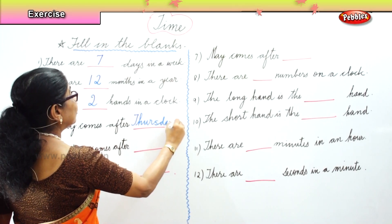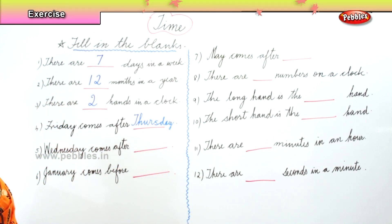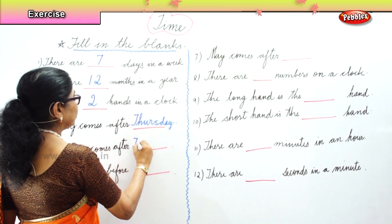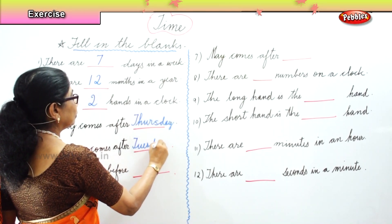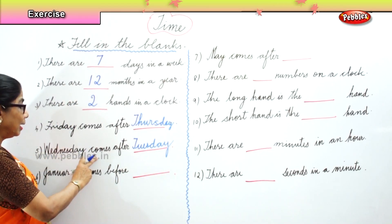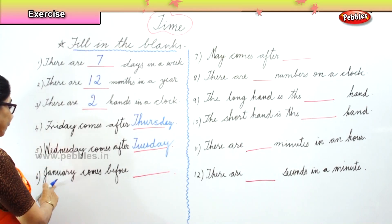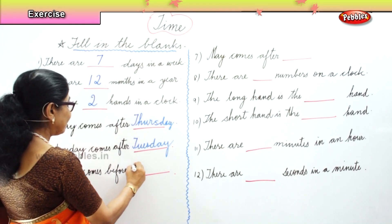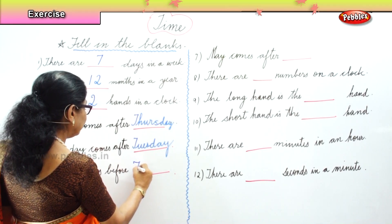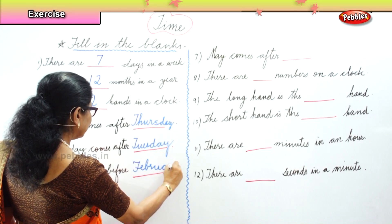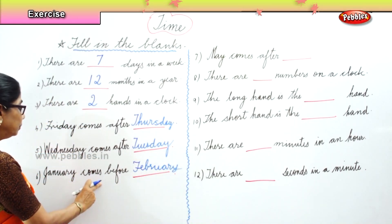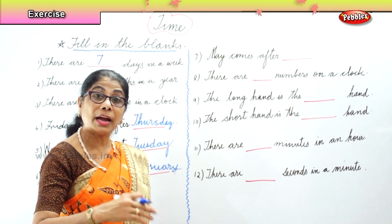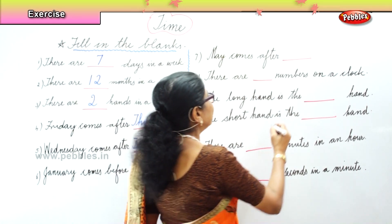Thursday — Friday comes after Thursday. Wednesday comes after Tuesday. Now, January comes before February. And May — the month of May — comes after April.